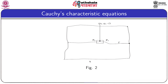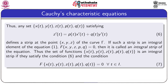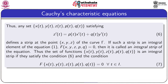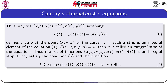Any set (x(t), y(t), z(t), p(t), q(t)) satisfying z′(t) = p(t)x′(t) + q(t)y′(t) defines a strip along the curve γ. If such a strip is also an integral element of equation 1, i.e. F(x, y, z, p, q) = 0 for all t ∈ I, then the strip is called an integral strip of the given equation.